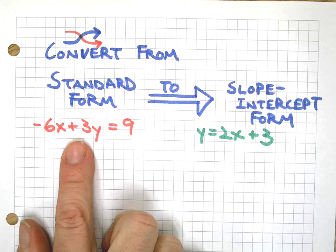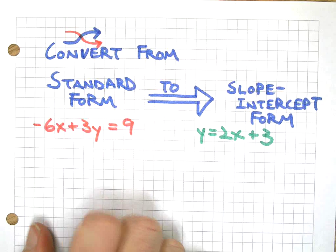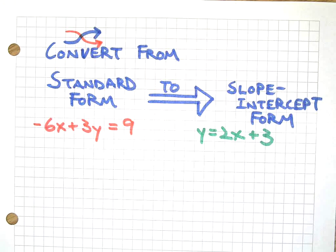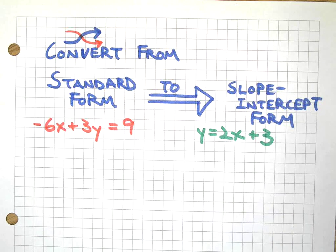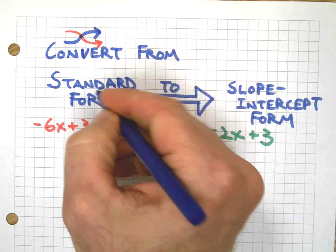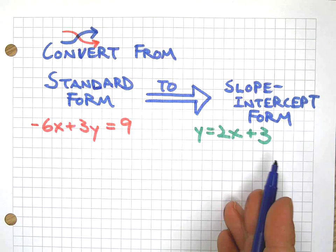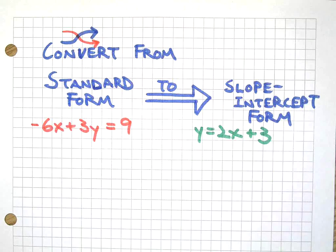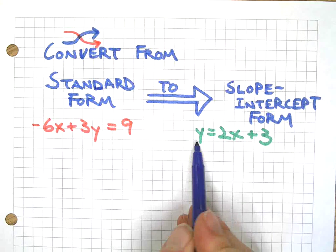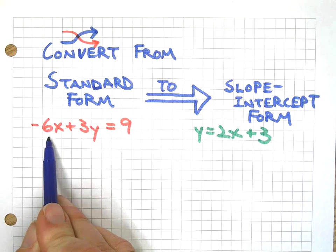Or you're just simply asked to convert it to slope-intercept form to show that you understand what that means. So whatever the reason, you need to know how to do it, so here we go. I'm going to start with just this example that we have right here. So first of all, since I want it to look like this, this X needs to migrate to the other side.